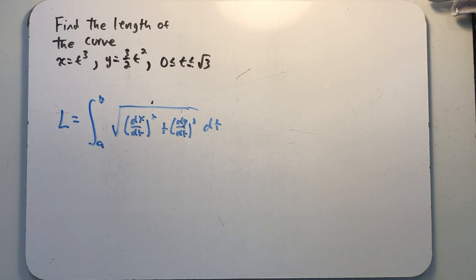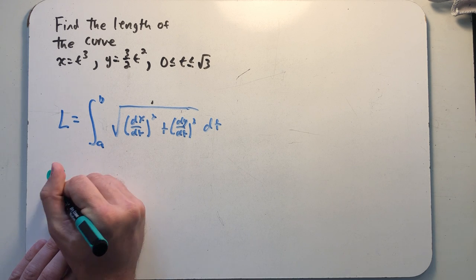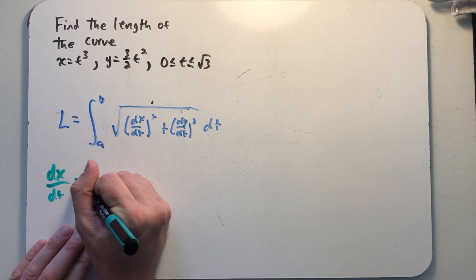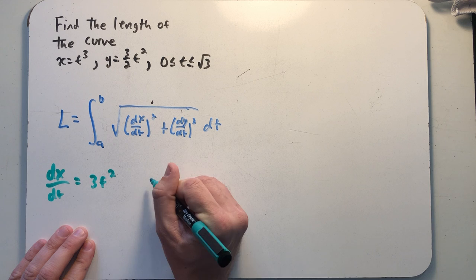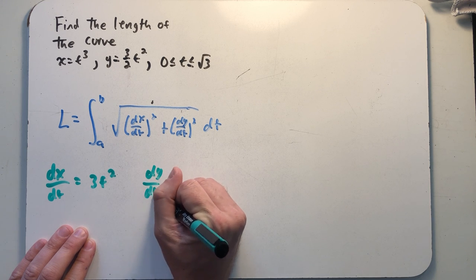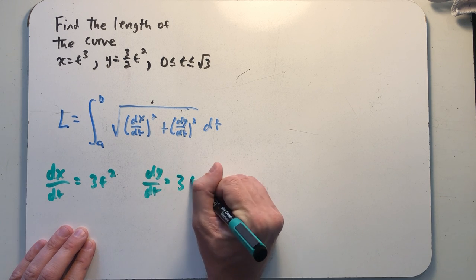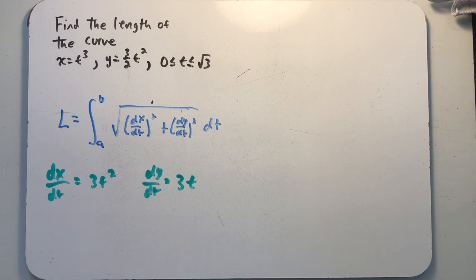Before I get started, I'm going to need to take a few derivatives. So let's go on and find dx dt and dy dt. Not too terribly difficult to differentiate here. All right, so I get 3t squared and I get 3 times t.